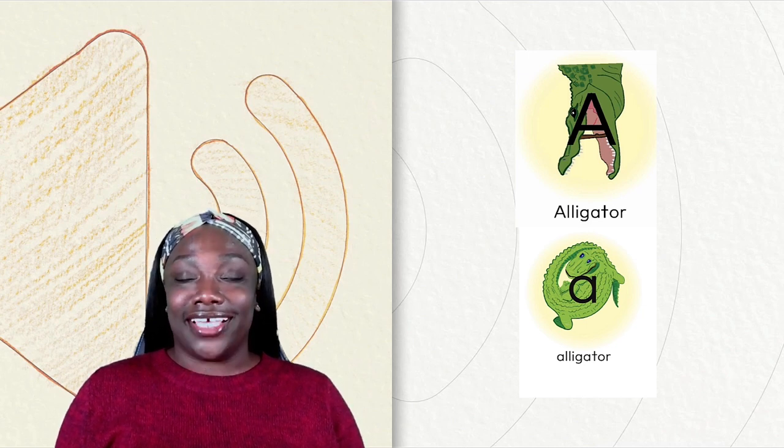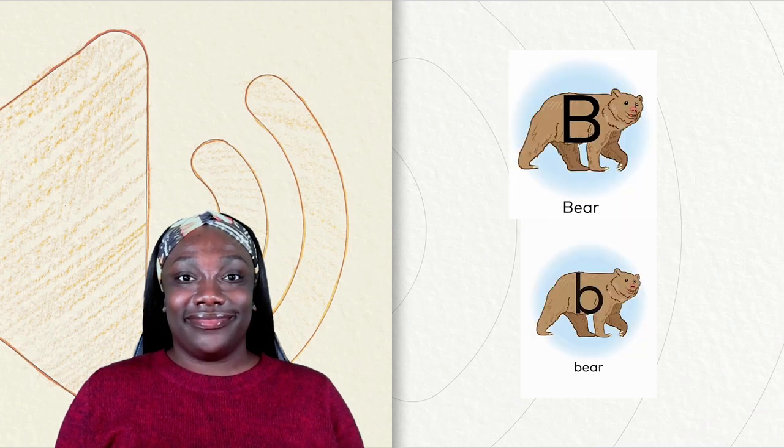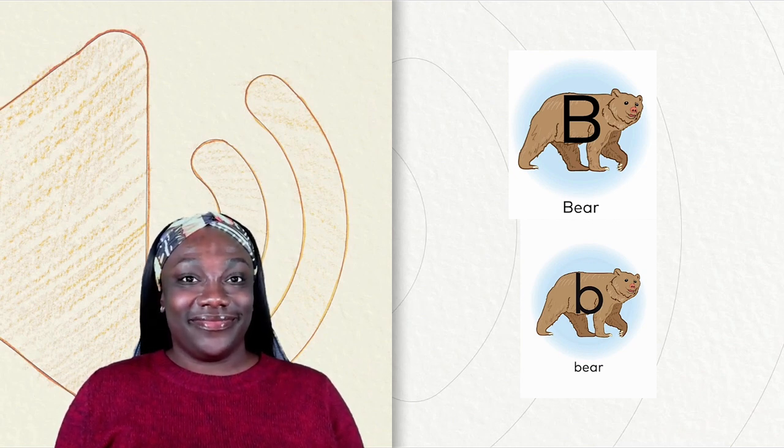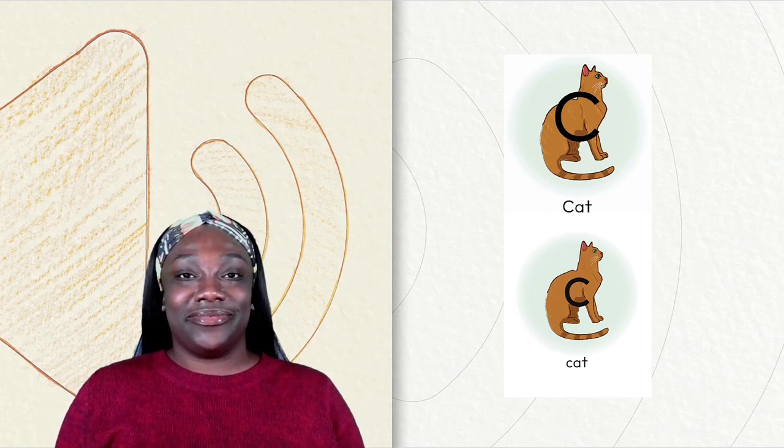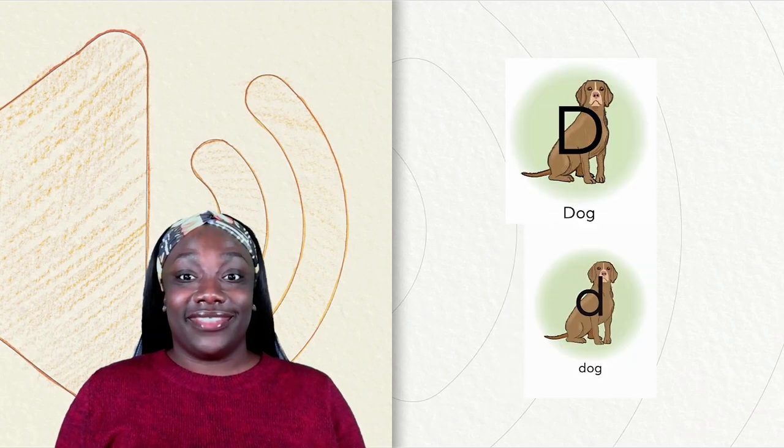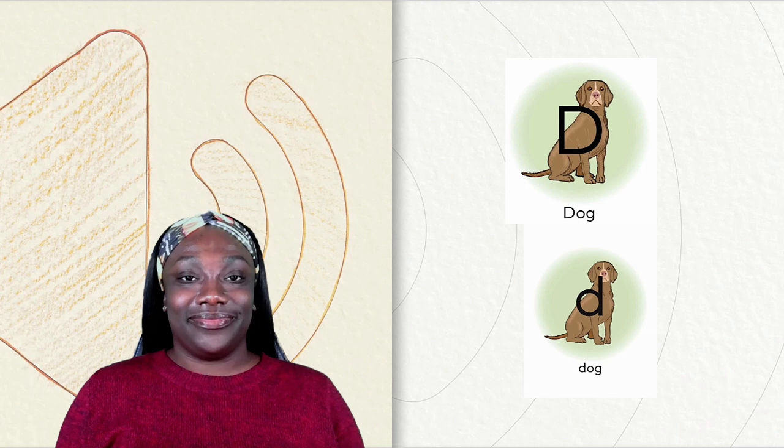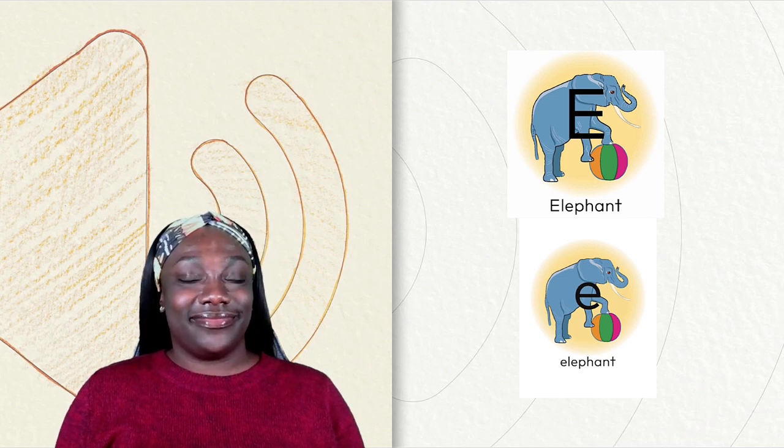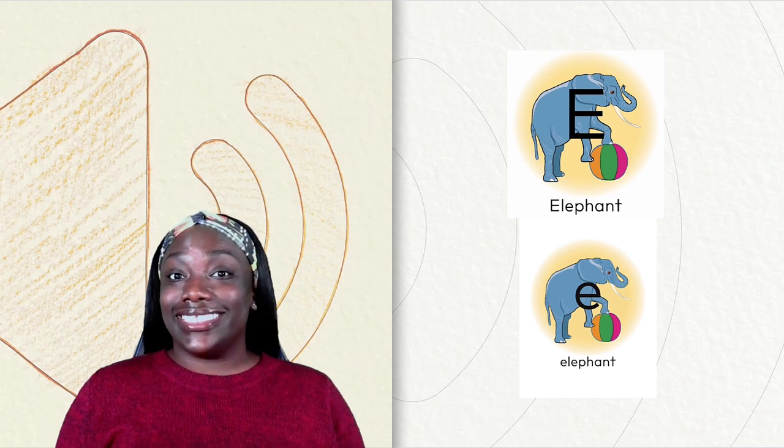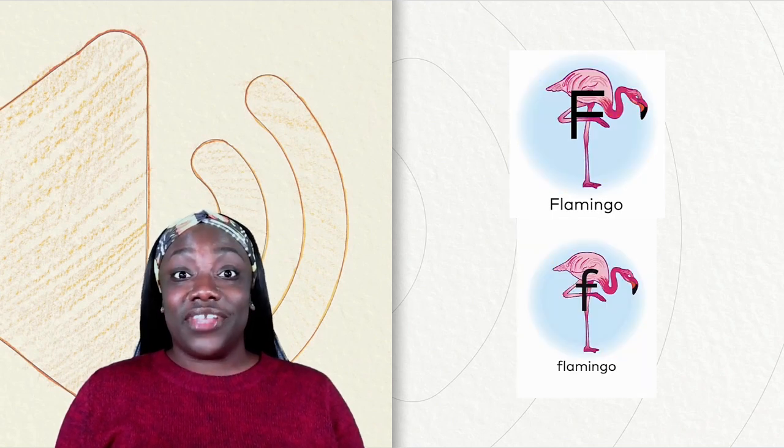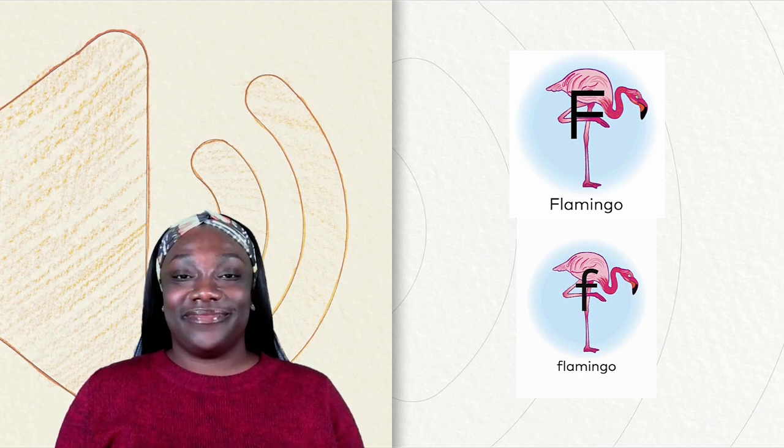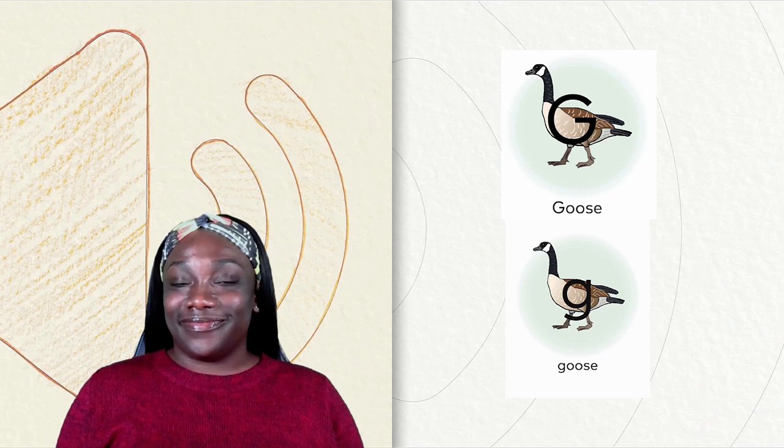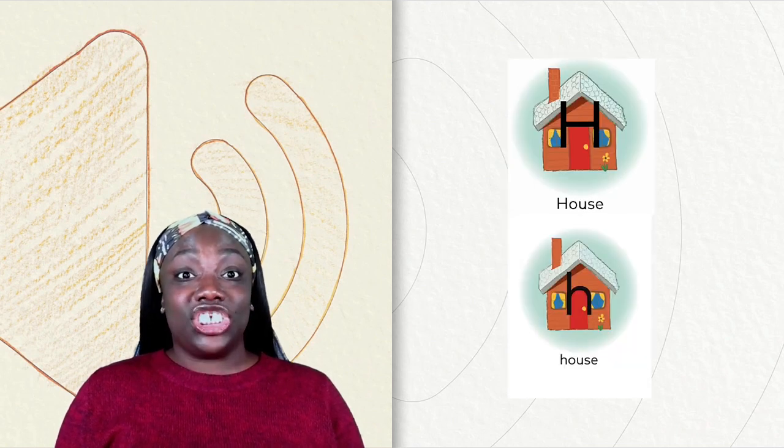A, alligator, ah. B, bear, b. C, cat, c. D, dog, d. E, elephant, e. F, flamingo, f. G, goose, g. H, house, h.